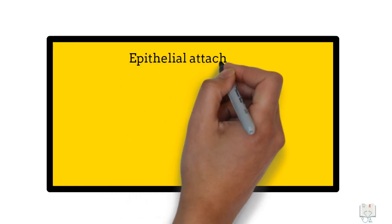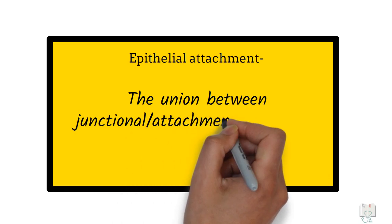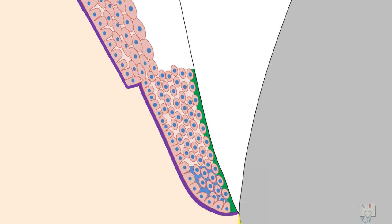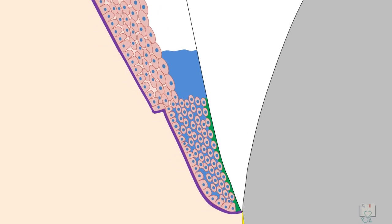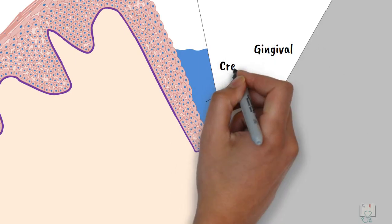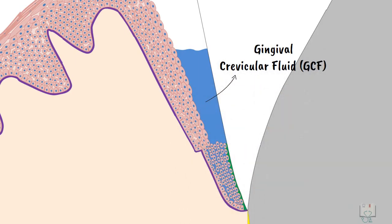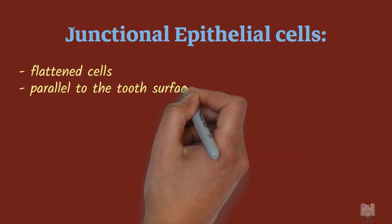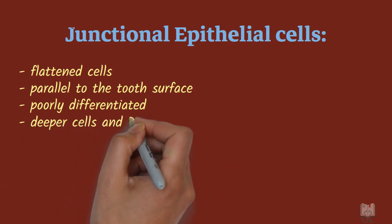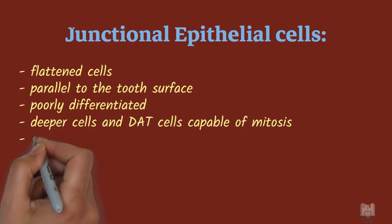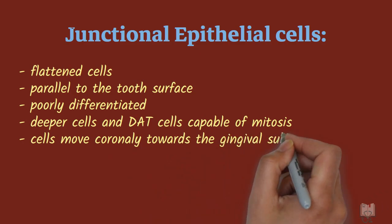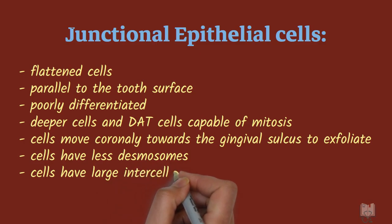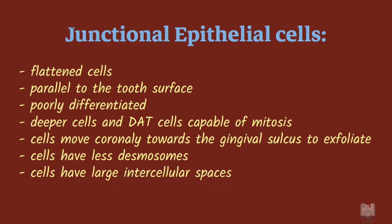That is, epithelial attachment is the union between junctional epithelium and the tooth. Junctional epithelium is highly permeable, which permits movement of fluid from the connective tissue, filling the gingival sulcus and thus forming the gingival crevicular fluid. Morphologically, the junctional epithelial cells are flat and aligned parallel to the tooth surface. They are poorly differentiated. The deeper cells and the DAT cells are capable of mitosis and migrate coronally. They have fewer intracellular junctions and larger intercellular spaces, resulting in high permeability of junctional epithelium.